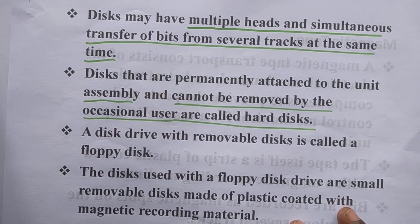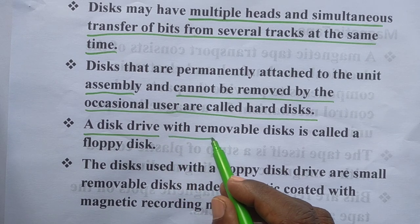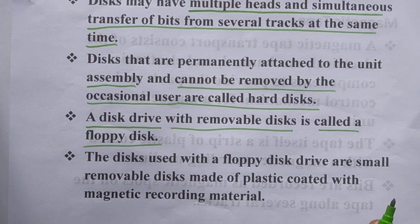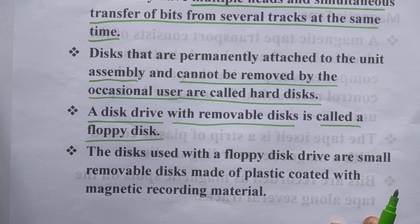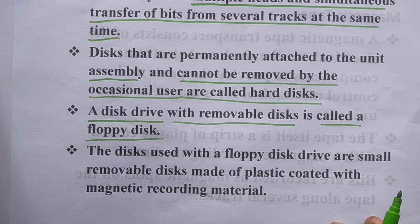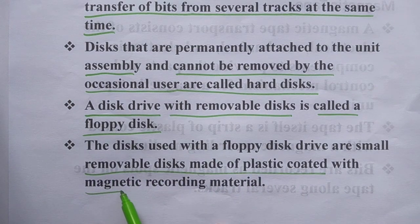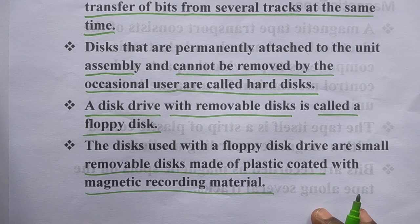A disk drive with a removable disk is called a floppy disk. Disks used with a floppy disk drive are small, and only a small amount of data can be stored. It is a small removable disk made of plastic coated with a magnetic recording material — similar to a magnetic disk in that regard.